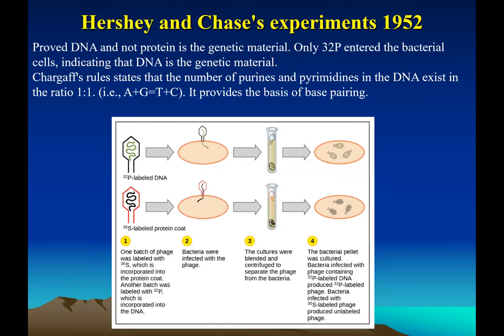The question before the 1950s was: is DNA the genetic material, or is it protein? Then Hershey and Chase did a simple experiment to prove DNA is the genetic material. Bacteria can be infected by a bacteriophage. In one batch, the DNA was labeled with P-32; in the other batch, the phage protein was labeled with S-35. After infection, they ground up the sample and found P-32 in the pellet, proving that DNA was entering the cell and was the genetic material.